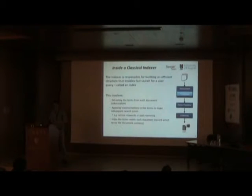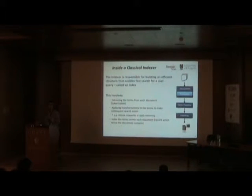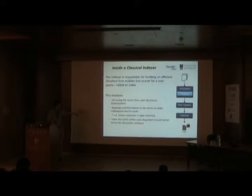The index is responsible for building an efficient structure that enables fast search for a user query. When a document arrives, we need to understand what format it is in — whether HTML or PDF. Once we can parse that document type, we work at the level of individual terms. In English, it's easy to tokenize on spaces. Other languages are more complex, like Chinese, where bigrams might be more indicative of a word boundary. We might apply transformations to the terms such as removing stop words or applying stemming, and then we index the terms that occur in the document — recording which terms that particular document contains.